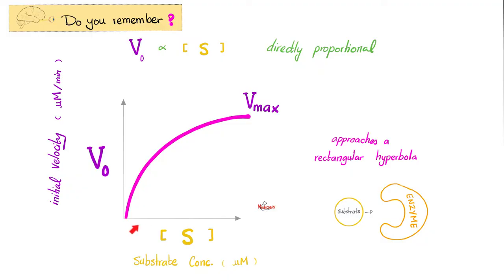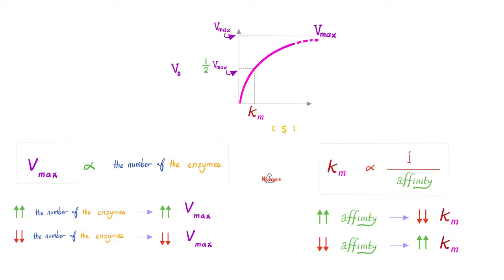Recall from Michaelis-Menten that as substrate concentration goes up, the rate of reaction goes up as well, giving a line going upward that levels off at a ceiling known as Vmax. Also recall that as the number of enzymes available goes up, Vmax goes up; as enzymes available go down, Vmax goes down. When affinity between substrate and enzyme goes up, Km goes down; when affinity decreases, Km goes up.